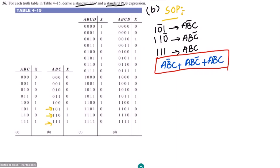Similarly, for the product of sum expressions, we have to find the terms for which the output is 0. Those terms are 000, 001, 010, 011, and 100.